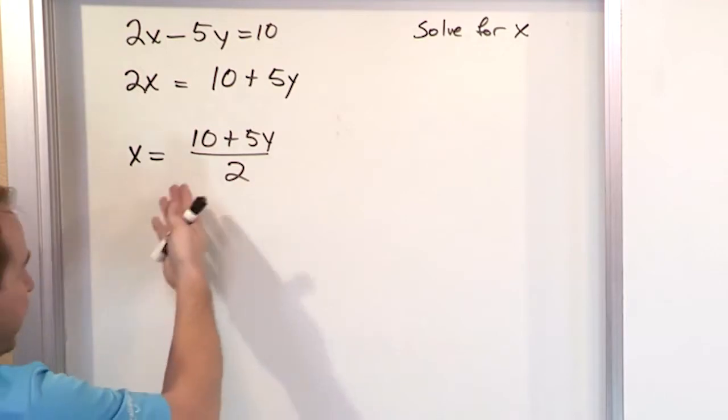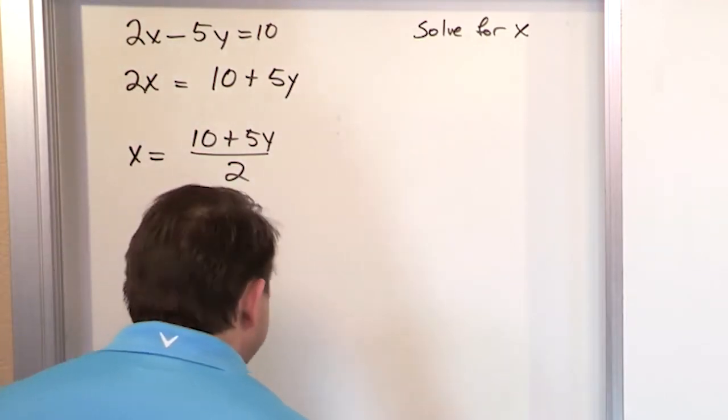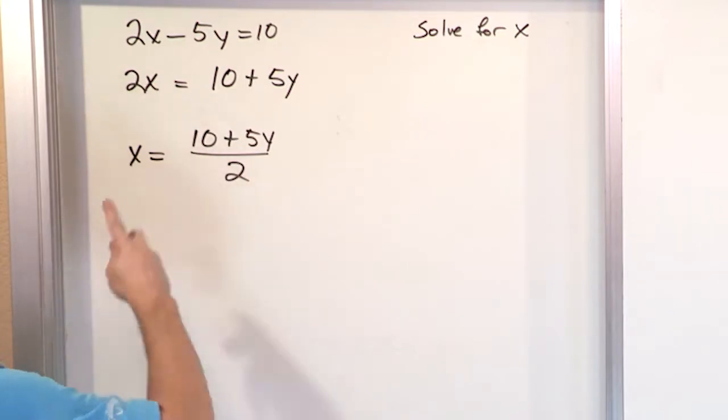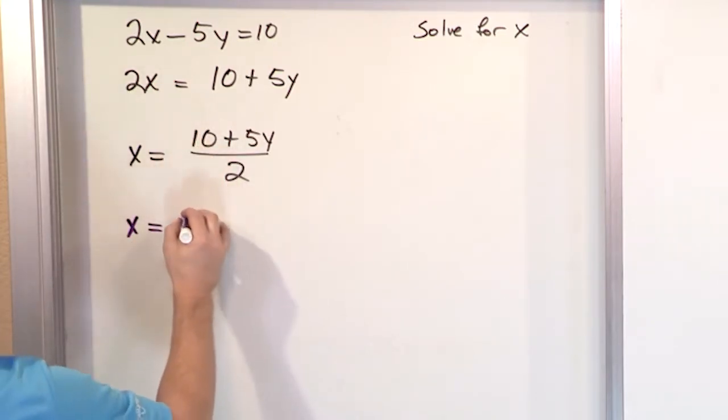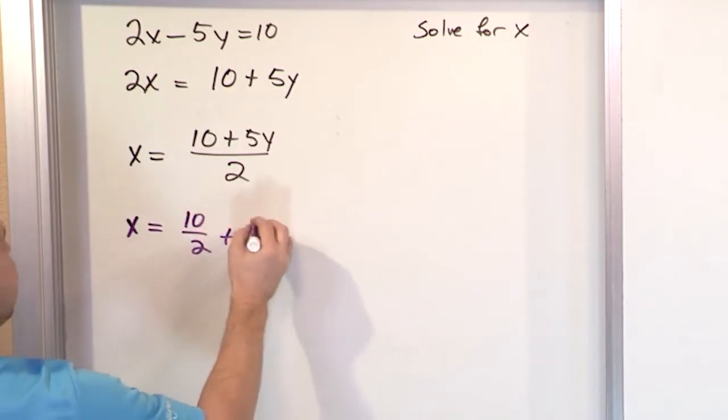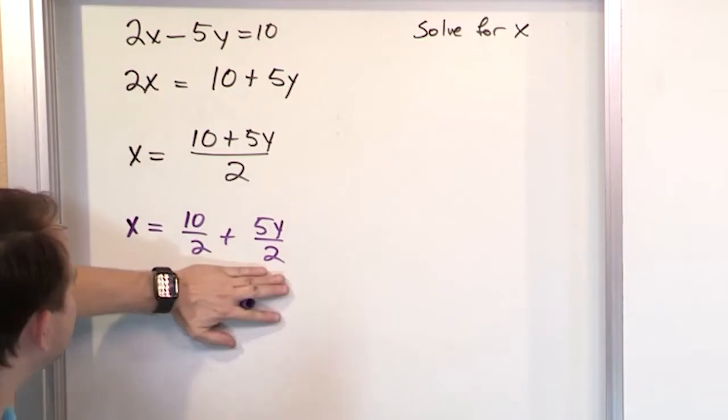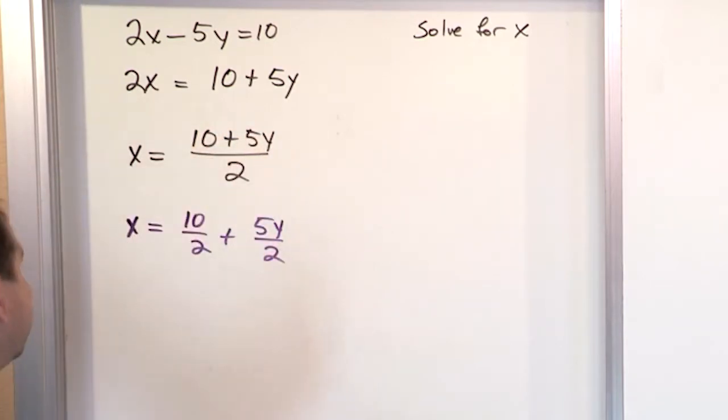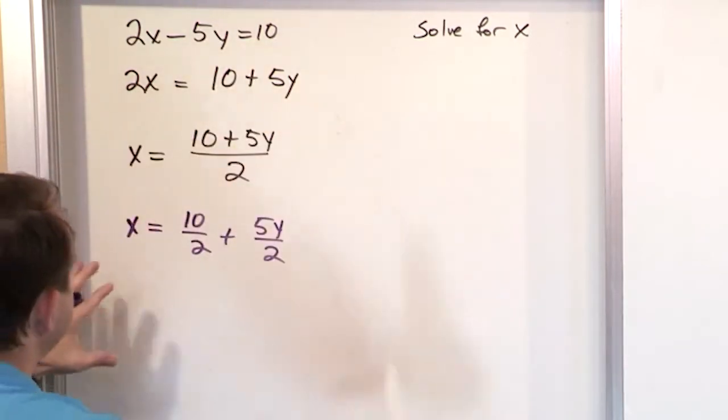Now you could probably stop there. This is what it's equal to. But remember I taught you, when you have a complicated thing added together over a number, to simplify it further what you really want to say is the first thing divided by 2 plus the second thing divided by 2. And that's because if you look at it as a fraction, the common denominator is 2 and you add the numerators so that gives you exactly back what you started. We're just going in reverse and splitting it up.